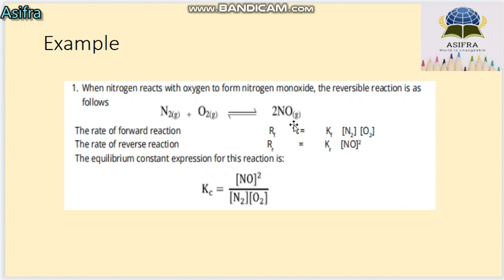For a specific example: nitrogen plus oxygen are the reactants forming 2NO (nitrogen monoxide). The rate of forward reaction is proportional to the molar concentration of N₂ multiplied by the molar concentration of O₂. For the reverse reaction, NO has 2 moles, so it appears as [NO] squared. The equilibrium constant expression becomes: Kc = [NO]² divided by [N₂] times [O₂].